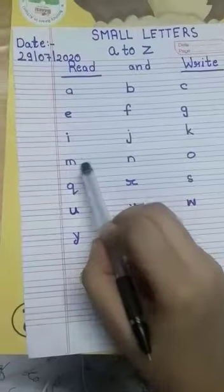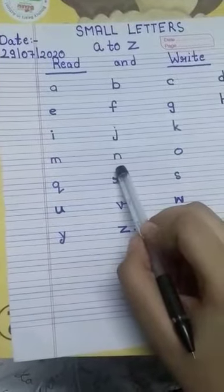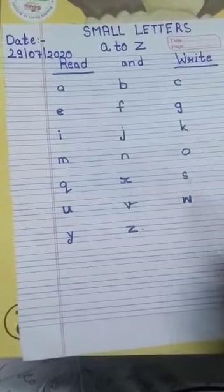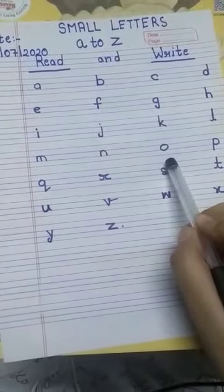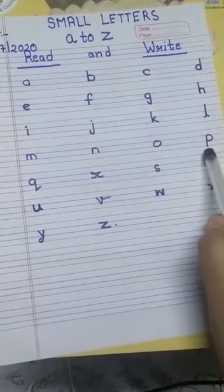M, M for monkey. N, N for nest. O, O for owl. P, P for parrot.